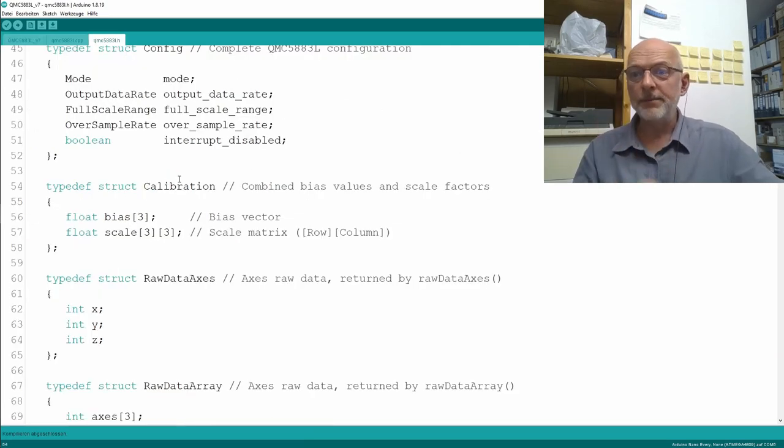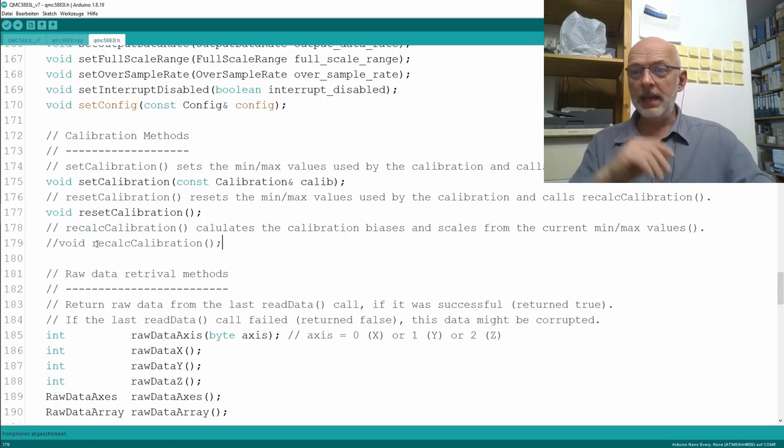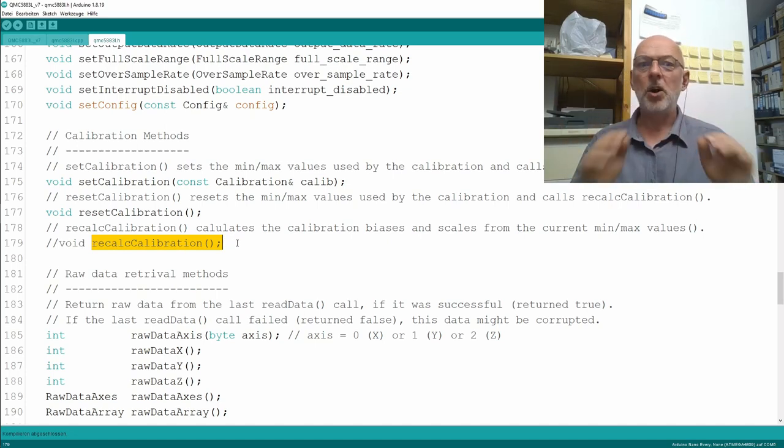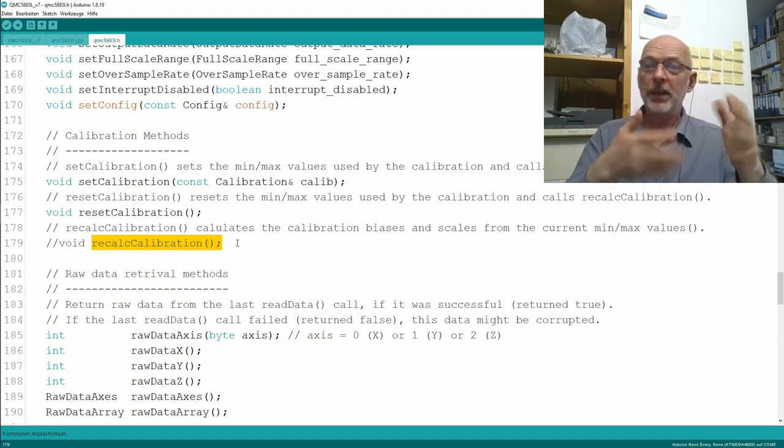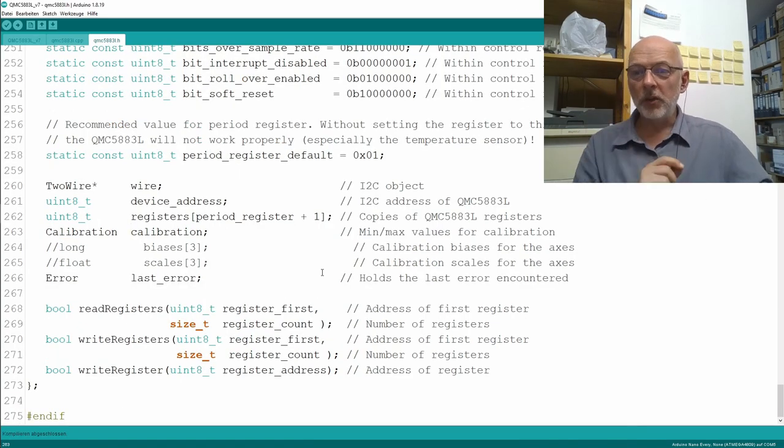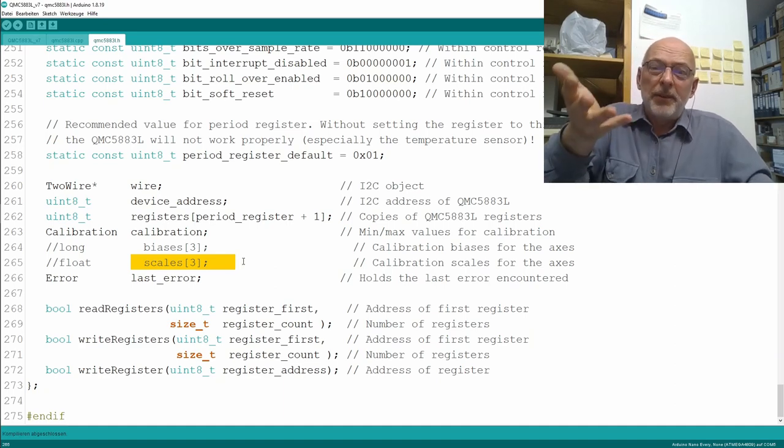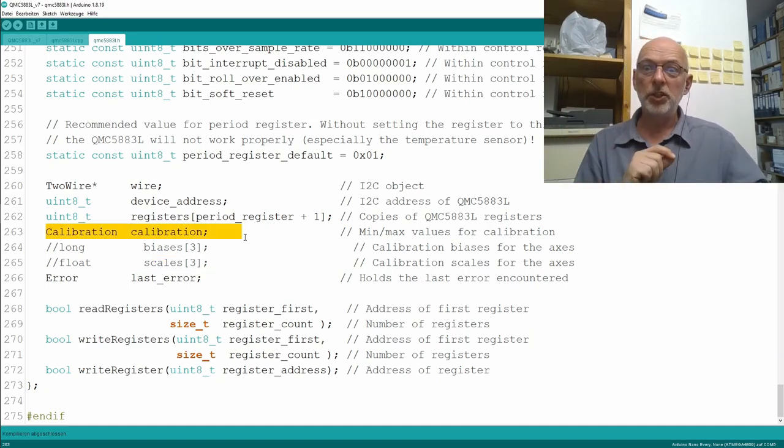In our header file, we have to change the struct calibration to contain that bias vector of three values and that scale matrix of three by three, so a total of nine values. The recalibration method no longer exists, and I've deleted all calls of it in the code because we do the calculation of the calibration data now in an external Windows program. We also no longer need the biases and scales arrays because the equivalent data is now contained in our calibration struct.